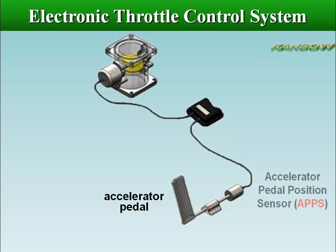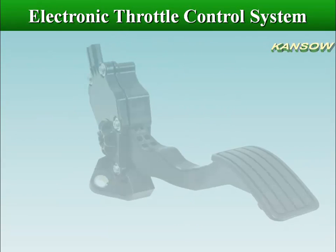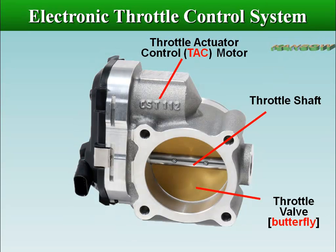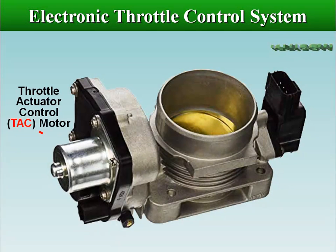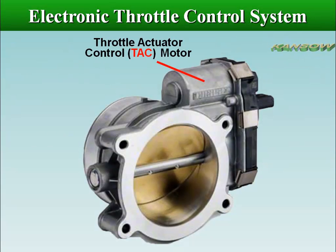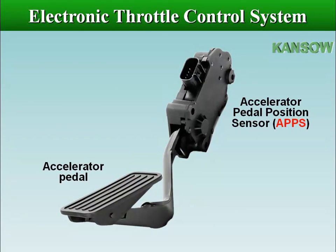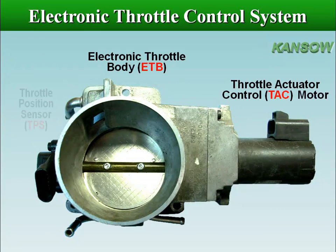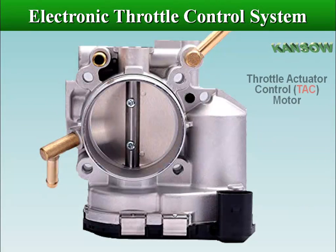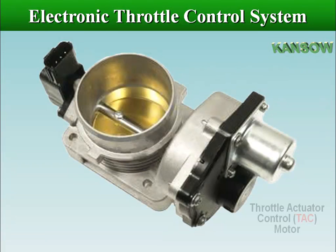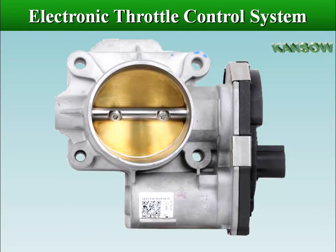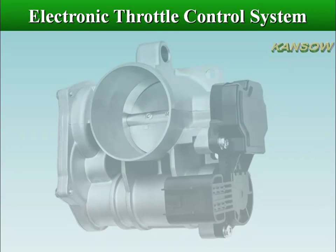Electronic throttle control is the technical name for what is known as drive-by-wire. The electronic throttle control system intelligent (ETCSI) is a system that uses the ECM or PCM to electrically control the throttle valve opening. In this system, the accelerator pedal opening angle is detected by the accelerator pedal position sensor, and the throttle position sensor detects the throttle valve opening angle. The ECM uses the throttle control motor to control the throttle valve opening angle to the optimum amount in response to how much the accelerator pedal is depressed. The development of the ETCSI system enabled better fuel economy, reduced emissions, and enabled safety features.